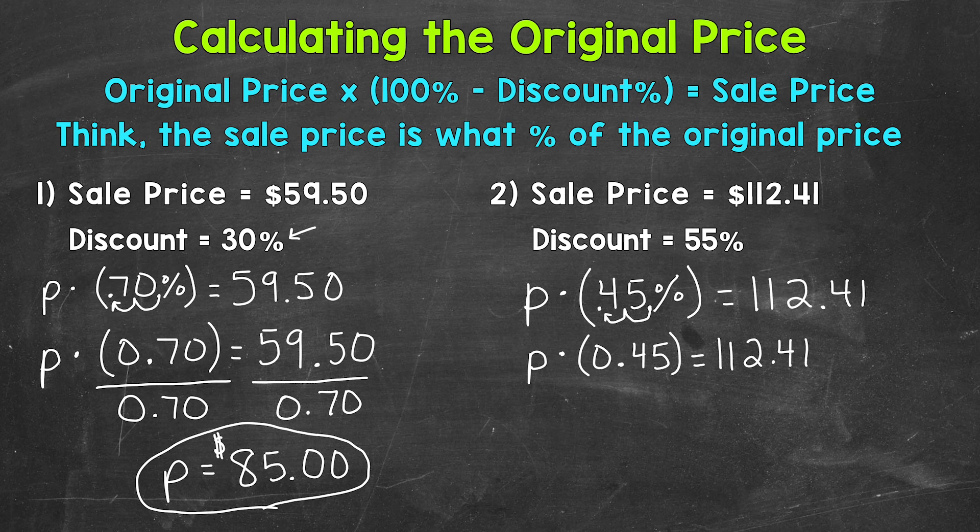And now we have a one step equation. So let's divide both sides by 0.45 in order to isolate our original price, that variable P. So divide by 0.45. And remember whatever you do to one side, you have to do to the other. So divide by 0.45.